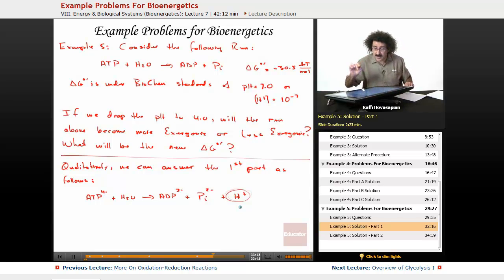Now, dropping the pH means raising the hydrogen ion concentration. Well, if you raise the hydrogen ion concentration, you know by Le Chatelier's principle that you're going to push the reaction that way. So qualitatively, you can answer this question.